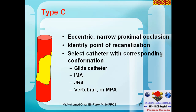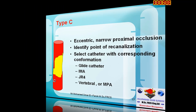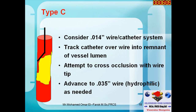Type C will always be eccentric and will always push you toward the sub-intimal plane. Try to use a glidecath, vertebral, or MPA catheter directed away from the branch — not toward the branch — in order to stay intra-luminal. If this fails, consider a 0.014 wire such as PT2 or V18 control wire.